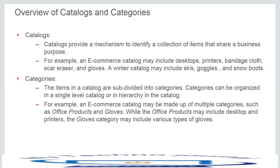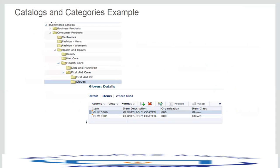For example, under the healthcare category we can subdivide it into diet and nutrition and first aid care. Under first aid care, we could further subdivide into first aid kits and gloves. This screenshot on the screen depicts an example of catalogs and categories. The e-commerce catalog has multiple categories arranged in a hierarchy, and gloves is just one of the examples.